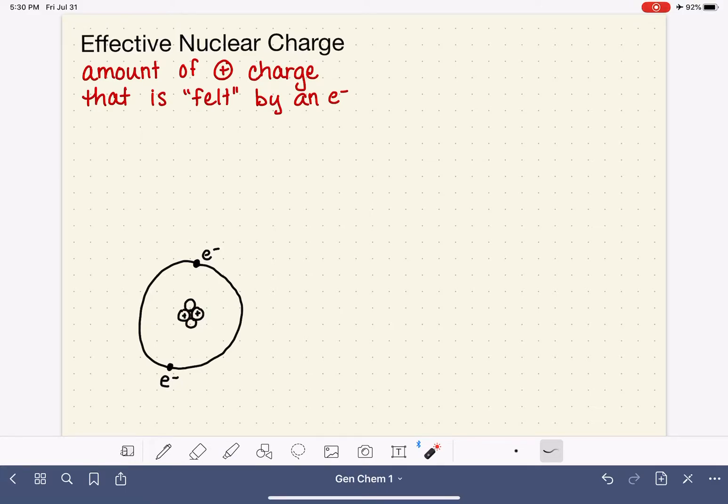And this phenomenon, again, is called effective nuclear charge. Effective nuclear charge is abbreviated either E-N-C, which stands obviously for effective nuclear charge, or it is abbreviated with a capital Z, subscript E-F-F.